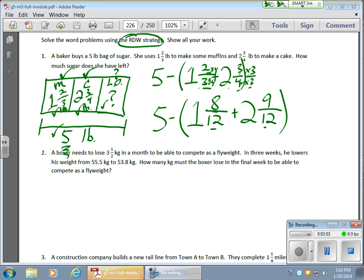So far I'm in pretty good shape. Now I'm going to combine these terms. My whole number is one plus two gives me three. Eight plus nine gives me seventeen over twelve. I'm not going to forget I'm subtracting all of that from five. I do notice I have an improper fraction: seventeen over twelve.